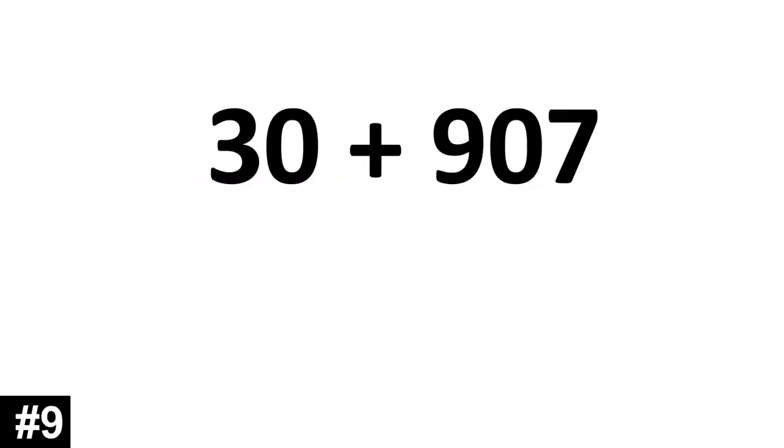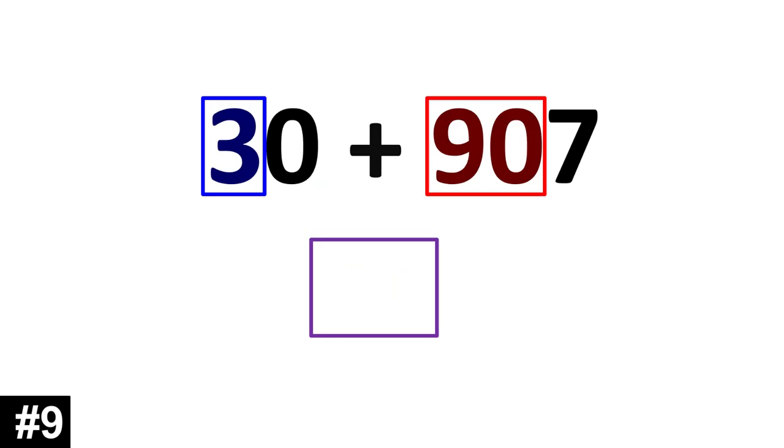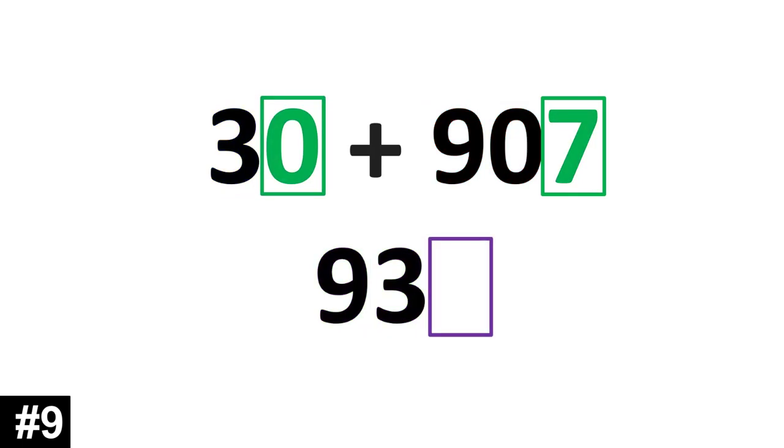30 plus 907. 30 has 3 tens, and 907 has 90 tens. 3 plus 90 is 93. We look to the ones. 0 and 7 is 7. 937.